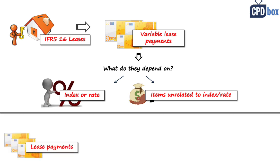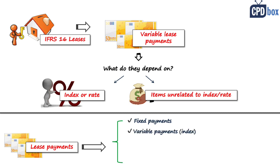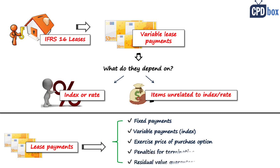Before explaining how to treat these variable payments, let me clarify what lease payments are under IFRS 16. For the purpose of lease accounting, lease payments consist of: fixed lease payments less any lease incentives, variable lease payments depending on an index or a rate, the exercise price of a purchase option if the lessee will exercise it, and penalties for terminating the lease if the lessee will terminate.